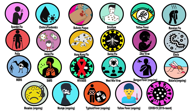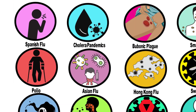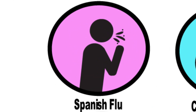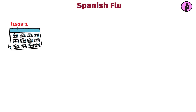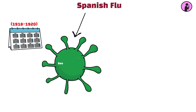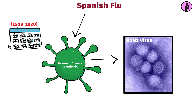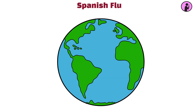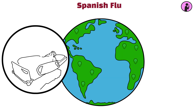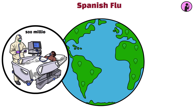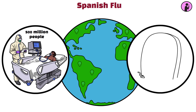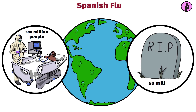Every global pandemic explained. Spanish flu, 1918 to 1920. The Spanish flu was a severe influenza pandemic caused by the H1N1 virus. It spread rapidly worldwide, infecting an estimated 500 million people and claiming the lives of 50 million.